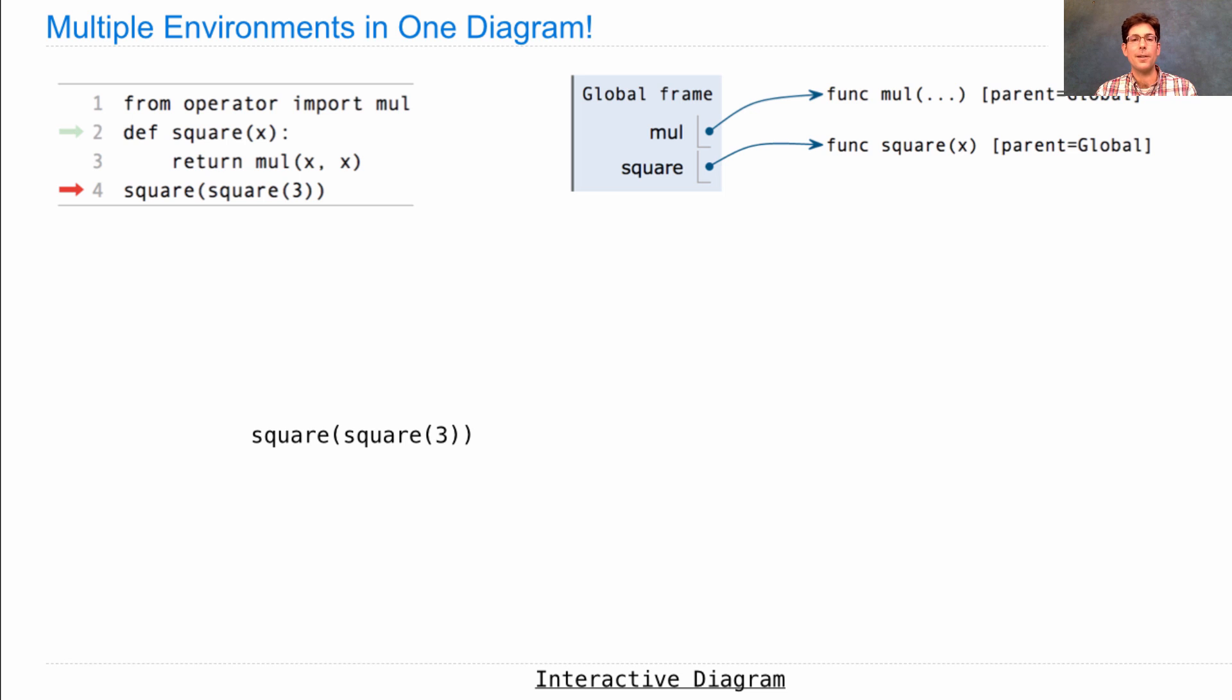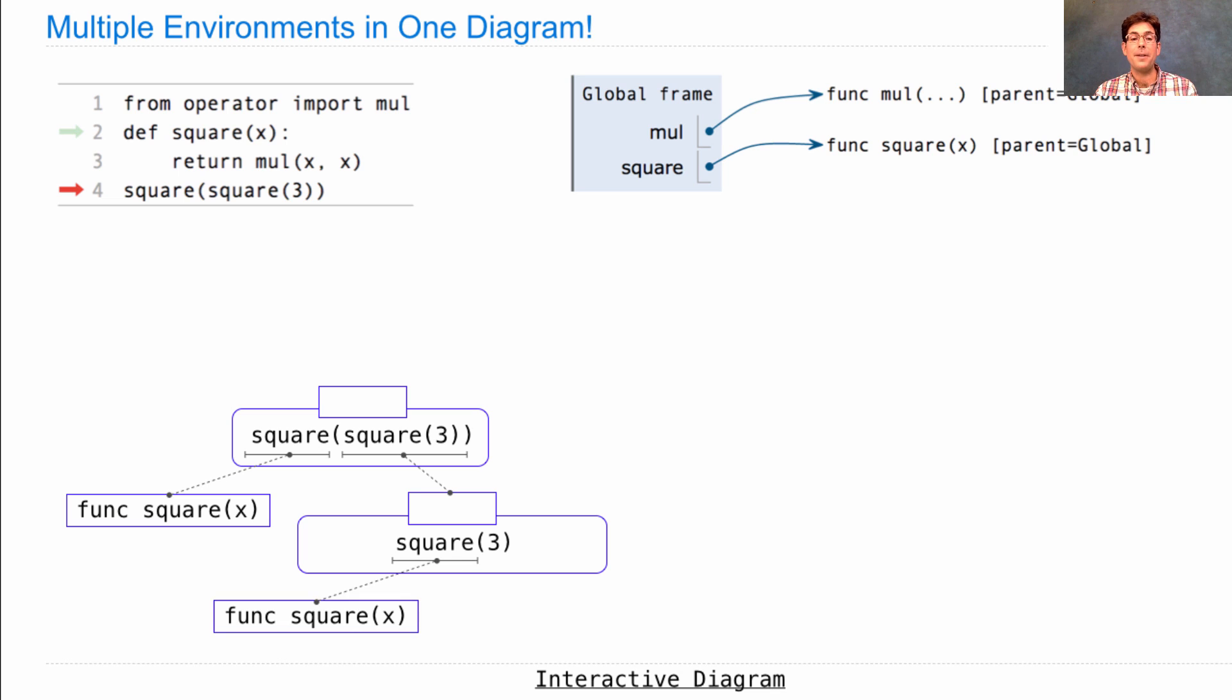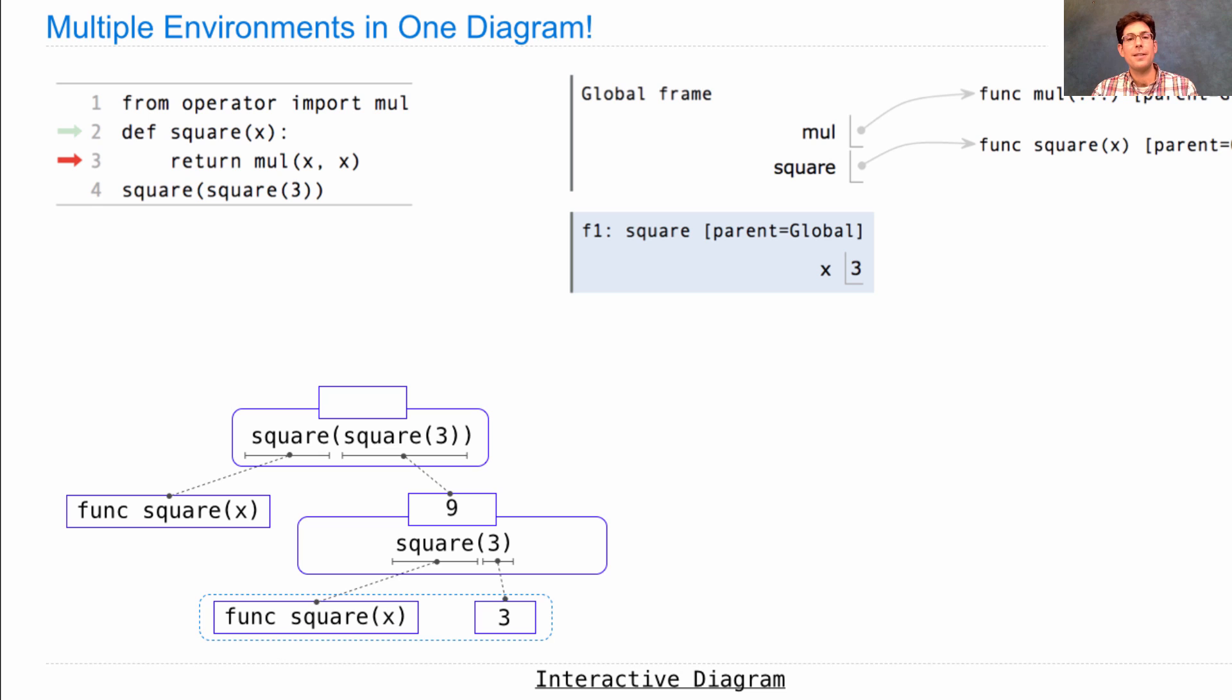Now we want to evaluate square square three. We do that by evaluating a call expression, which means figuring out that the operator is the square function and that square three has a value. To evaluate square three, we have to find that square is an operator, which is the square function again, and three is the number three. And then we apply the square function to the argument three, which is a user-defined function. So we have to go through that last set of steps. Those steps are introduce a new frame. That's what you see here. So this frame we've labeled as F1 just because it's the first one we've introduced. It came from the square function, and its parent is the global frame. I'll explain that in just a moment.